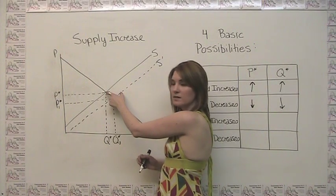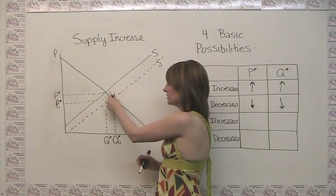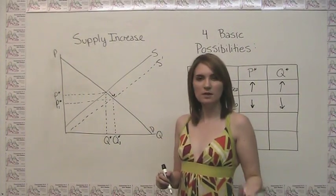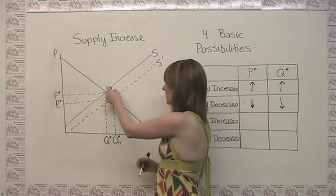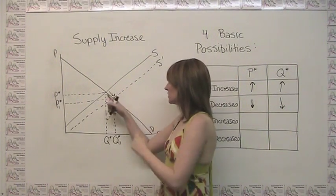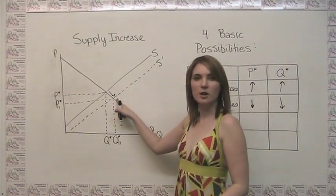So when we have a surplus, the price gets bid down until the point where supply and demand equalize. So this temporary surplus turns into this new equilibrium here. And you'll notice we're going down and to the right on our graph.